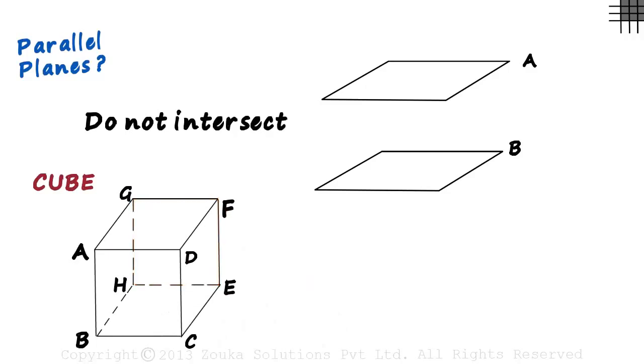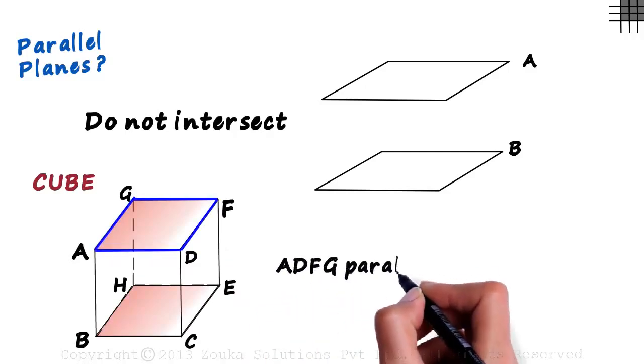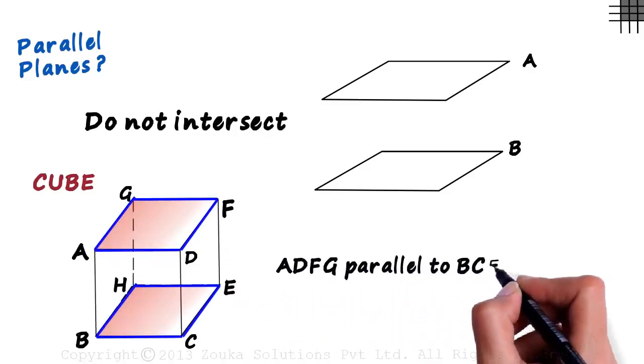Every pair of opposite planes in a cube is parallel. To consider an example, we can say that the top and the bottom surfaces are parallel to each other. Plane ADFG is parallel to plane BCEH.